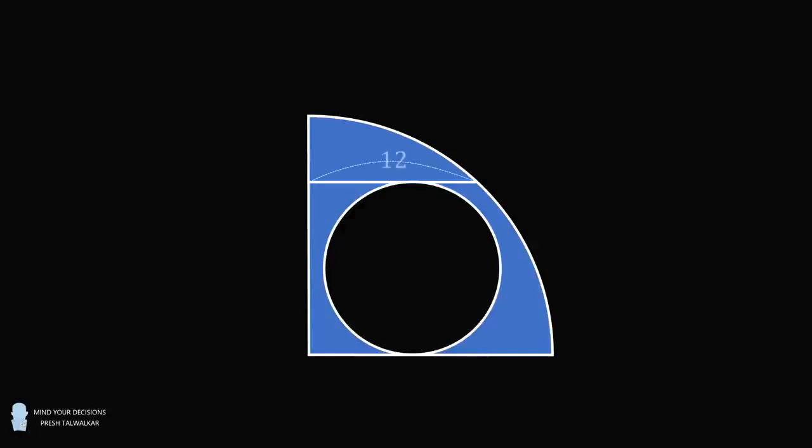If this line segment has length equal to 12, find the area that's shaded in blue, which is the area of the quarter circle not contained within the small circle.